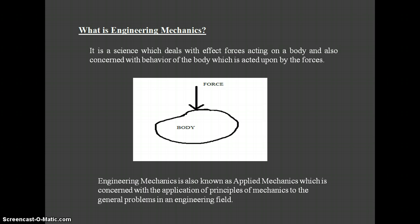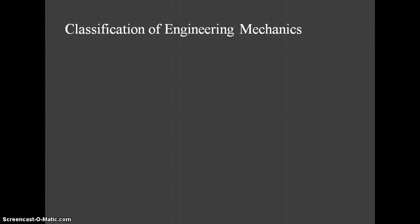Next is the classification of Engineering Mechanics. Engineering Mechanics is classified into two forms. The first is Statics and the second is Dynamics — Static Engineering Mechanics and Dynamic Engineering Mechanics. So what do we mean by Statics?